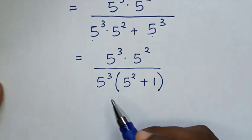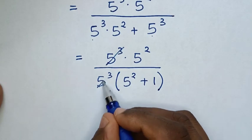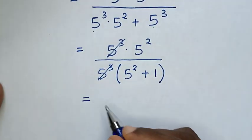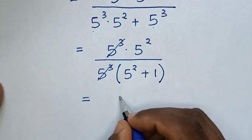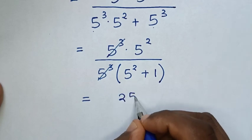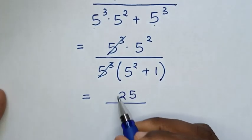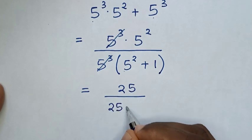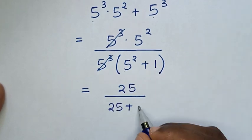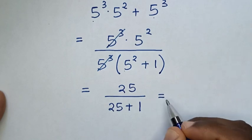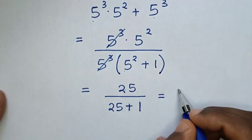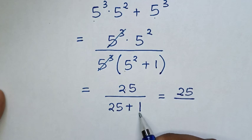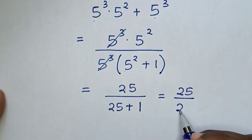Then to simplify, 5 power of 3 will cancel with 5 power of 3. So it will be equal to 5 power of 2, which is 25, over 5 power of 2, which is 25, plus 1. Then it will be equal to 25 over 25 plus 1, which is 26.